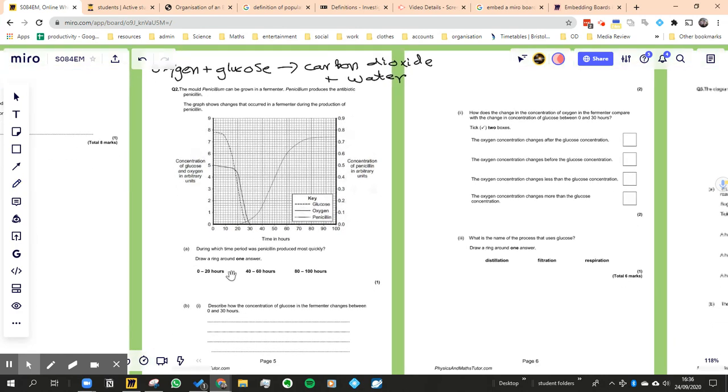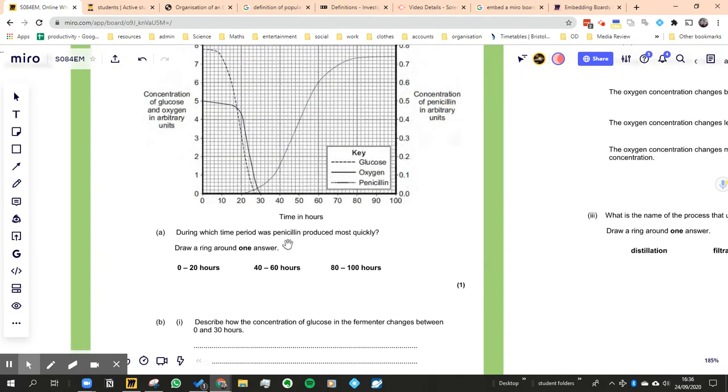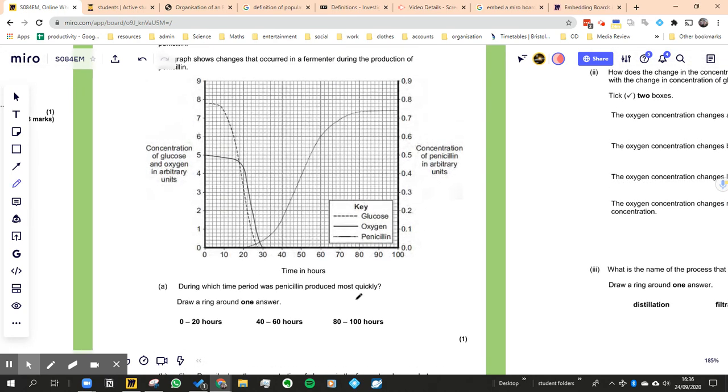Now, the question is saying during what time period was penicillin produced most quickly? So really, all you need to be thinking about is identifying the right line, which is this one here. That's the one for penicillin.